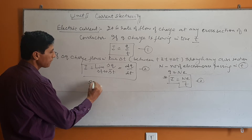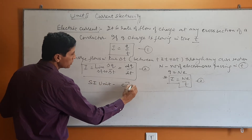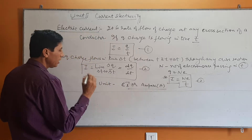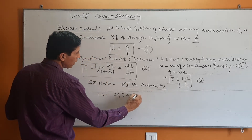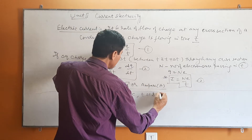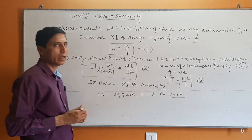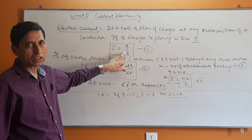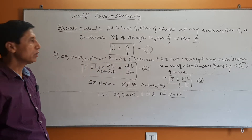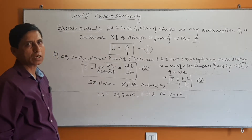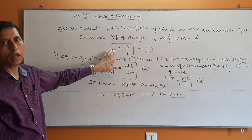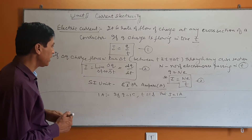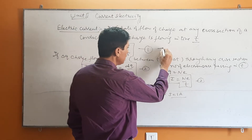The SI unit of electric current is coulombs per second, which is called ampere, with symbol capital A. One ampere is defined as the current in a conductor when 1 coulomb of charge flows in 1 second through any cross-section of the conductor. Smaller units include milliampere and microampere. Current is a scalar quantity.